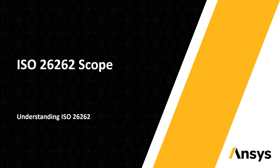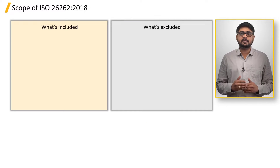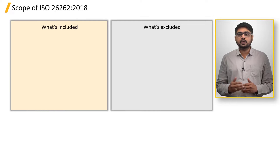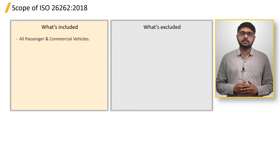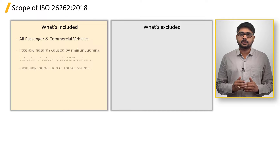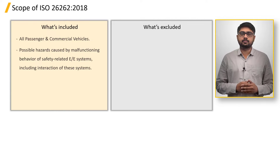In this section, we will discuss the scope of ISO 26262 2018 release. Understanding the scope is crucial as it helps us identify where the standards are applicable, and equally important is to recognize where the standards do not apply. All passenger and commercial vehicles should follow this standard, and all E&D systems and their interacting systems are also included in ISO 26262.